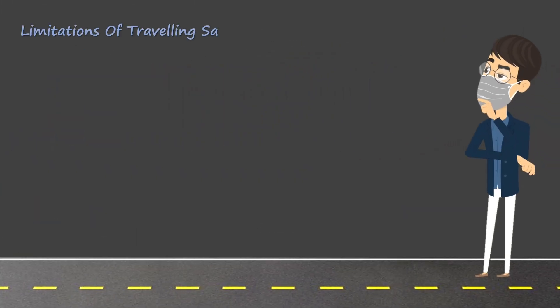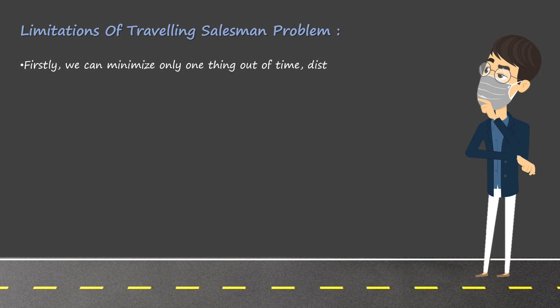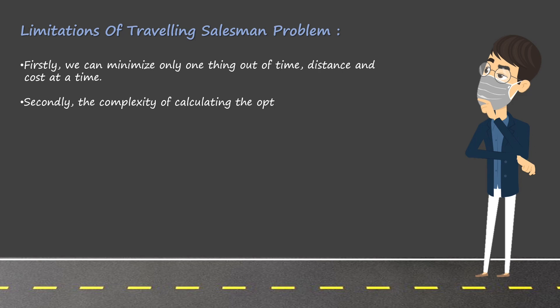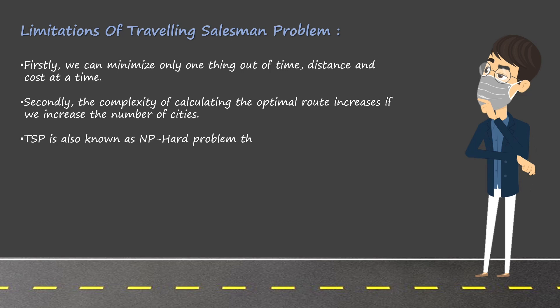Unfortunately, there are some limitations of the travelling salesman problem. Firstly, the basic constraint in TSP is that we can minimize only one thing out of time, distance, or cost at a single point of time. Secondly, the complexity of calculating the optimal route increases if we increase the number of cities. TSP is also known as an NP-hard problem, i.e. you cannot guarantee to find the shortest path within a reasonable time limit.